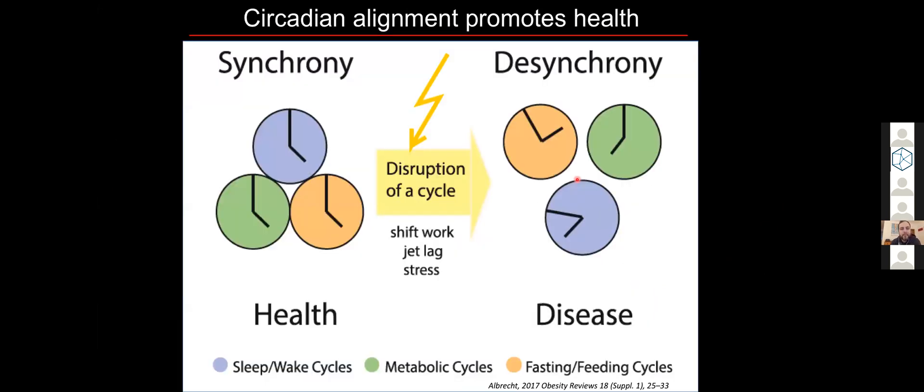So why should you care about this? Everyone here knows that circadian clocks are molecular oscillators in all cells of our body and they coordinate our 24-hour gene expression and metabolism with time of day. This is important for maintaining health and energy homeostasis and avoiding diseases.